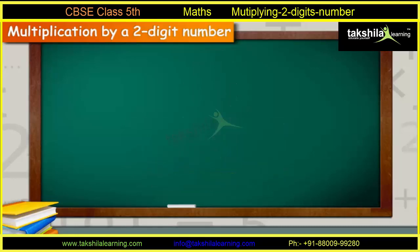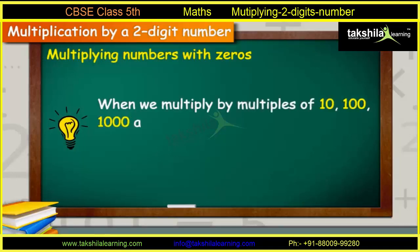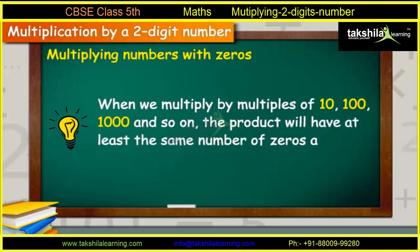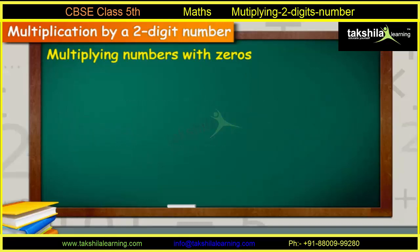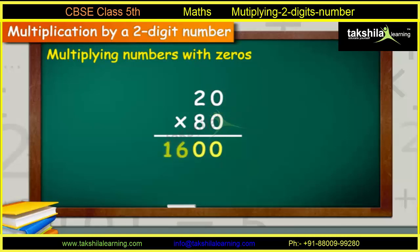Let us now study about multiplying numbers with zeros. Students, it is important to note that when we multiply by multiples of 10, 100, 1000 and so on, the product will have at least the same number of zeros as the factors. For example, if we multiply 20 with 80, their product will contain at least two zeros. Total number of zeros in 20 and 80 is 2. The answer therefore will be 1,600.